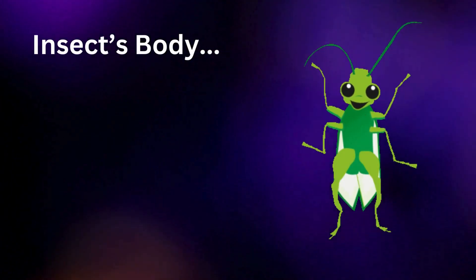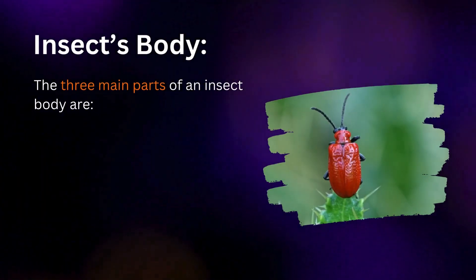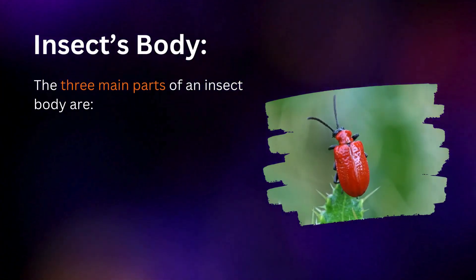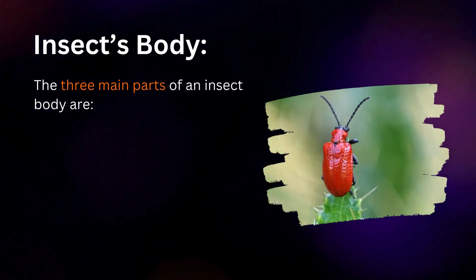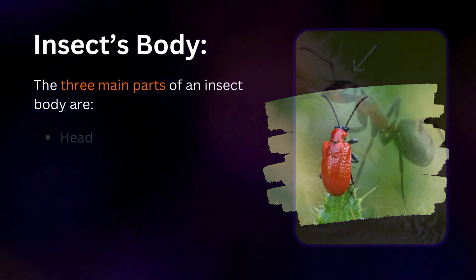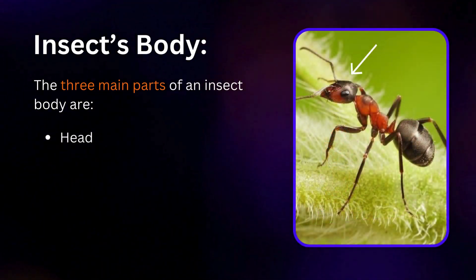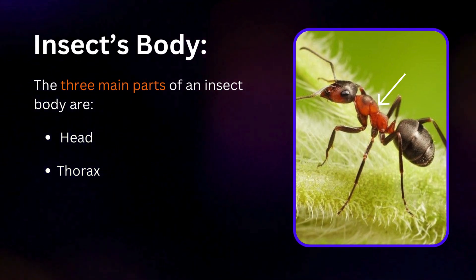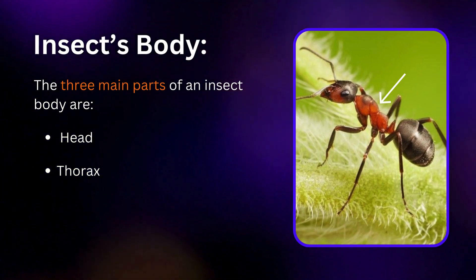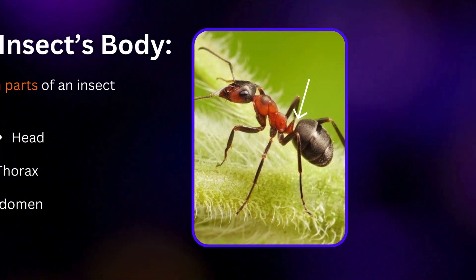Insects' body. The three main parts of an insect's body are the head, thorax, and abdomen.